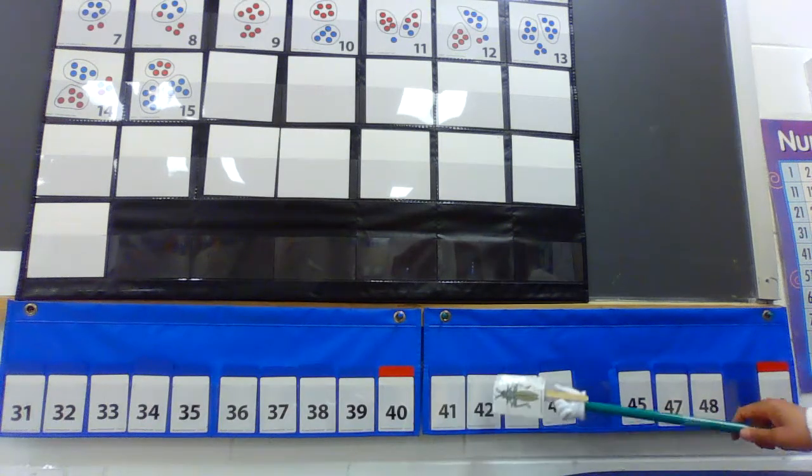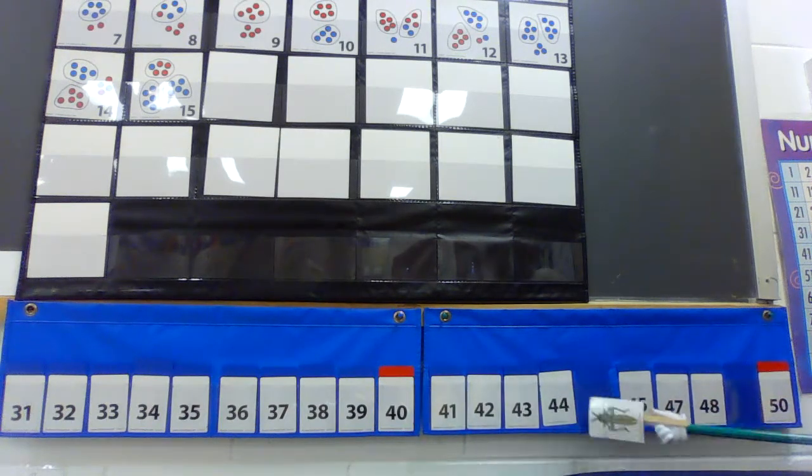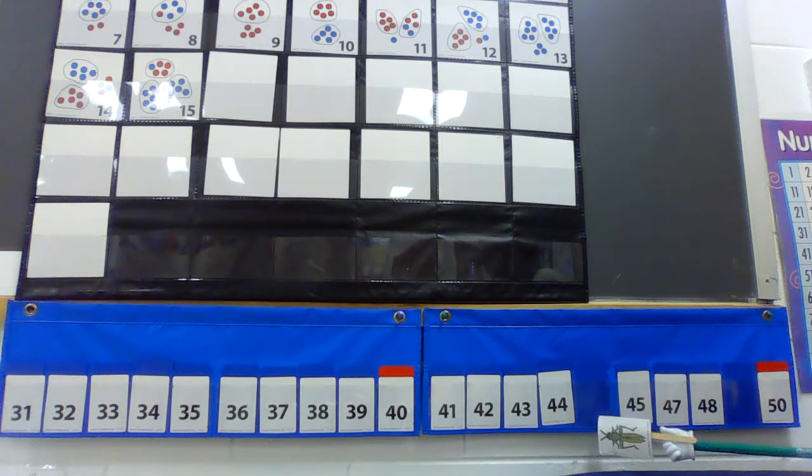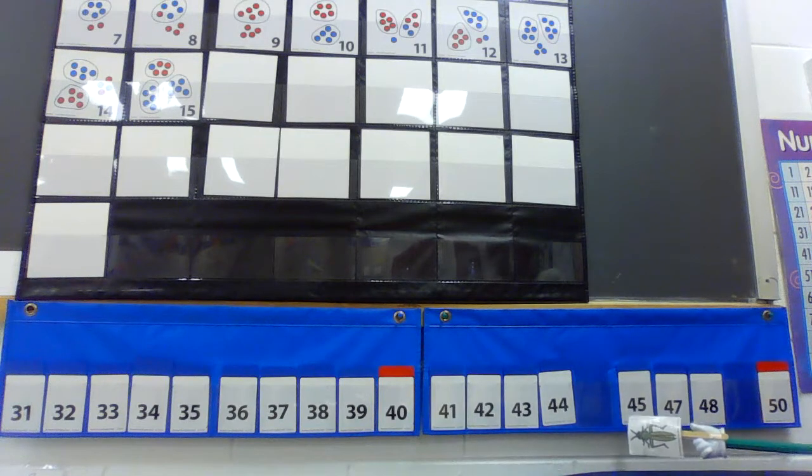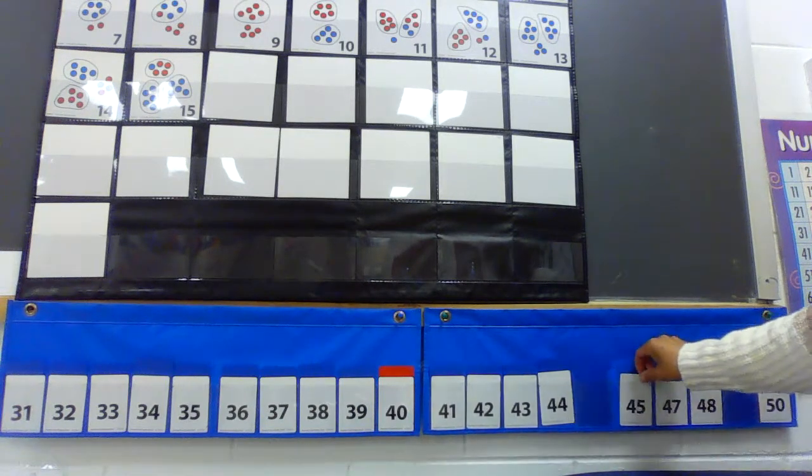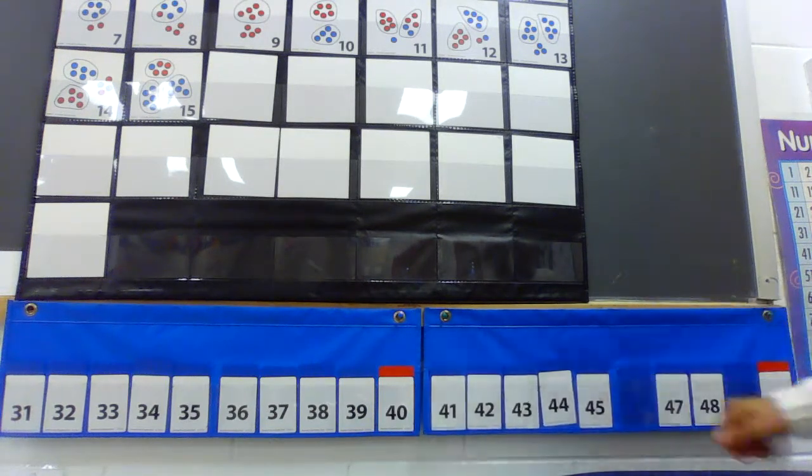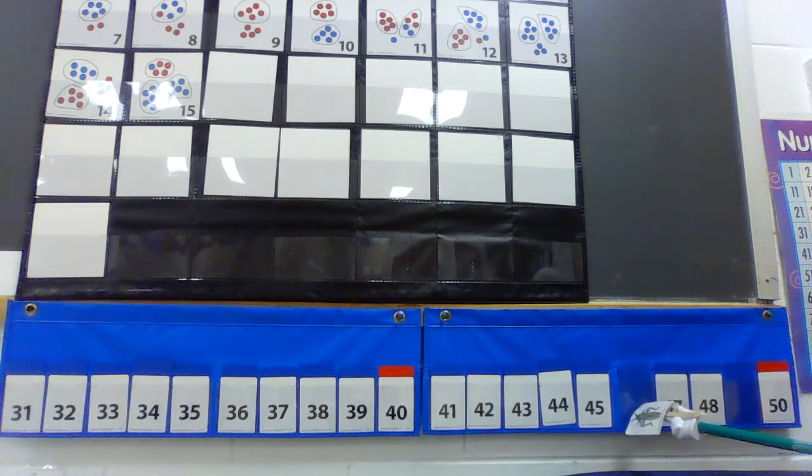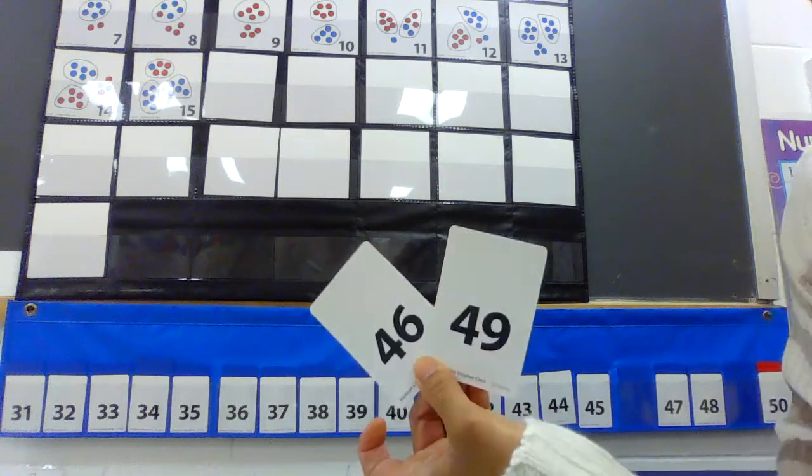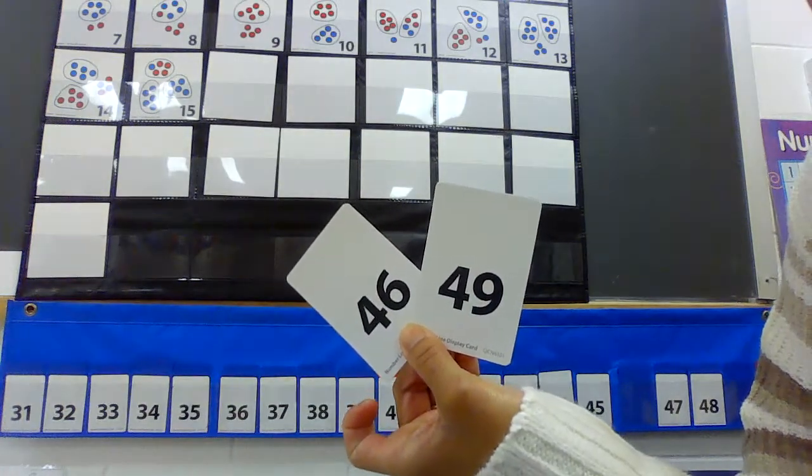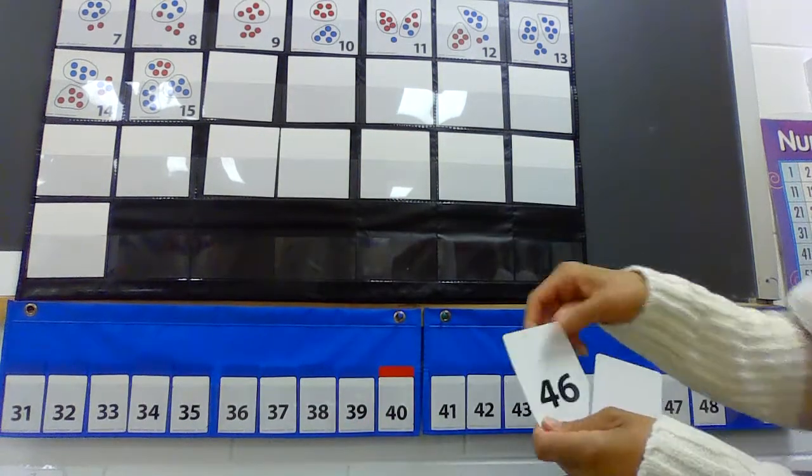41, 42, 43, 44. We're missing a number. What should be there? 45 should be there. We need to find it. There it is. Right next to it. Let's move 45 over. Oh my goodness. We're missing another number. What goes there? 46. I believe that's in my hand too. Which one's 46? The four and the six. 46.